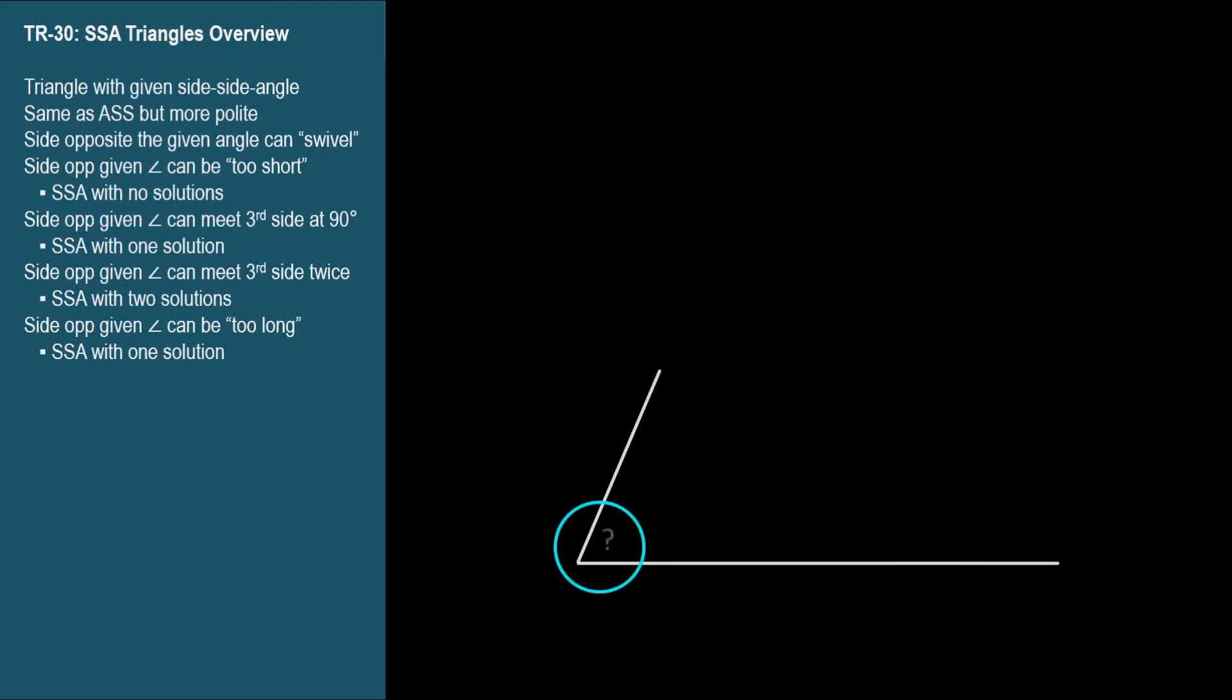We're given two sides, but we don't know the angle between them. You can think of a swivel at this point, where the sides can rotate around. We're given an angle over here, side-side angle,